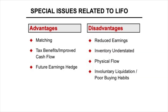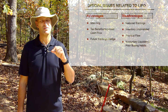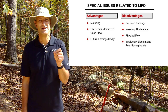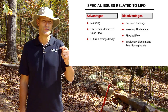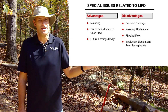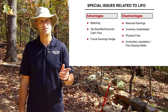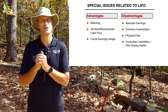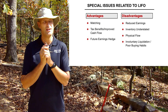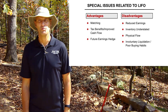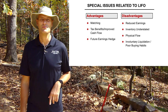Advantages of LIFO: it does a better job of matching current costs to current revenues. There is a tax benefit and improved cash flow — in a rising price environment you pay lower taxes, which means more cash stays in the business. You're essentially borrowing money from the IRS interest-free rather than from a bank. LIFO also acts as a hedge against future earnings, since if inventory levels fall you can sell off cheap old inventory and recognize income.